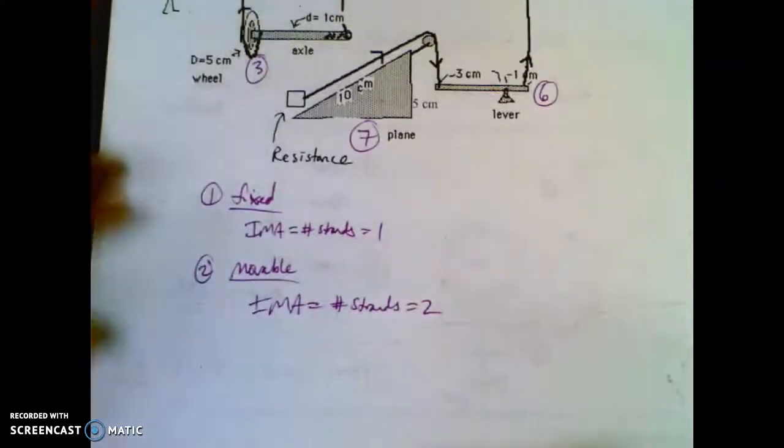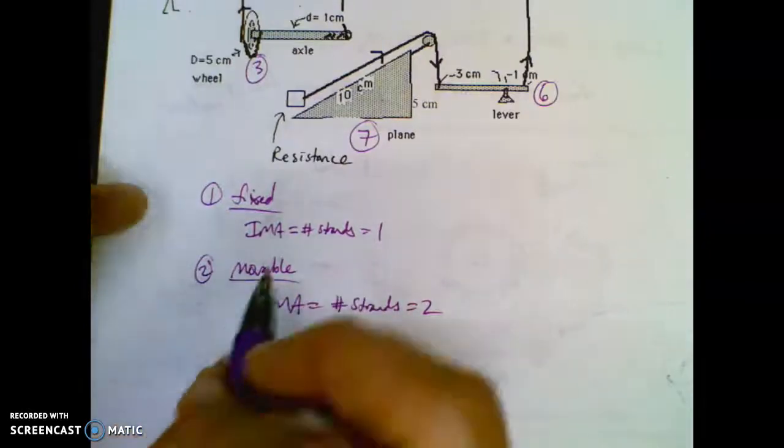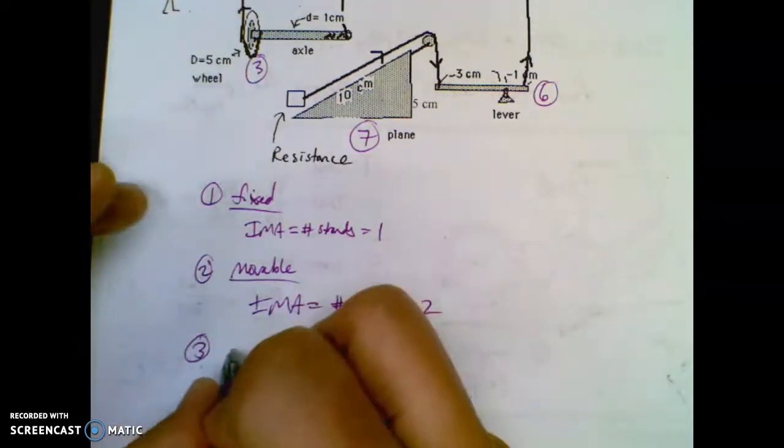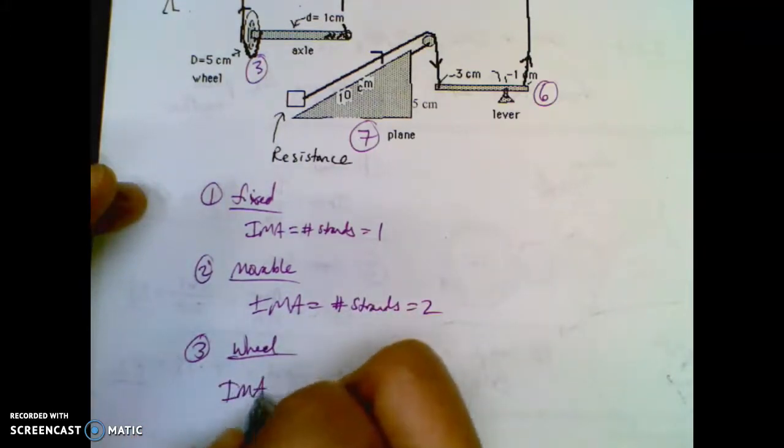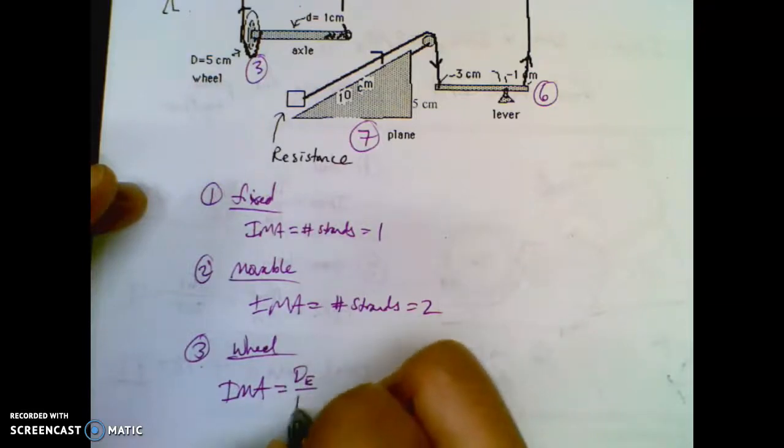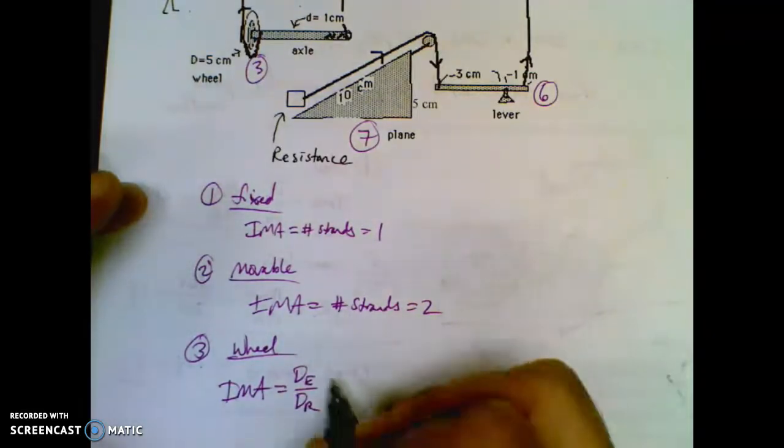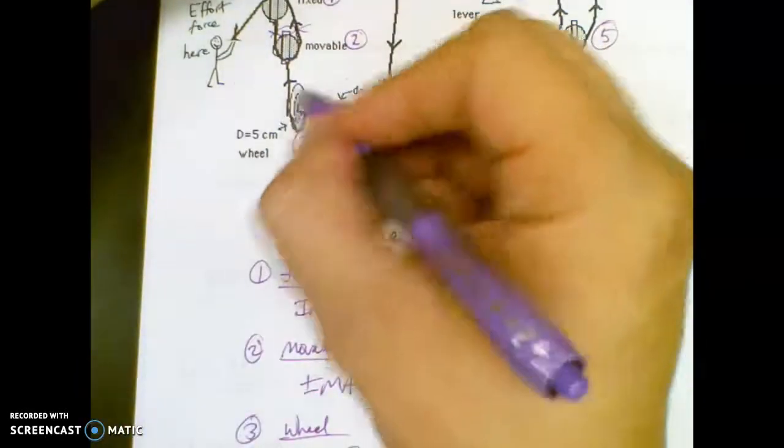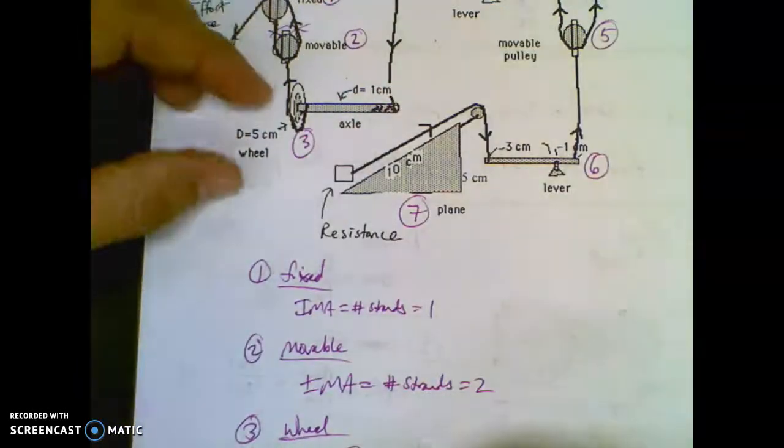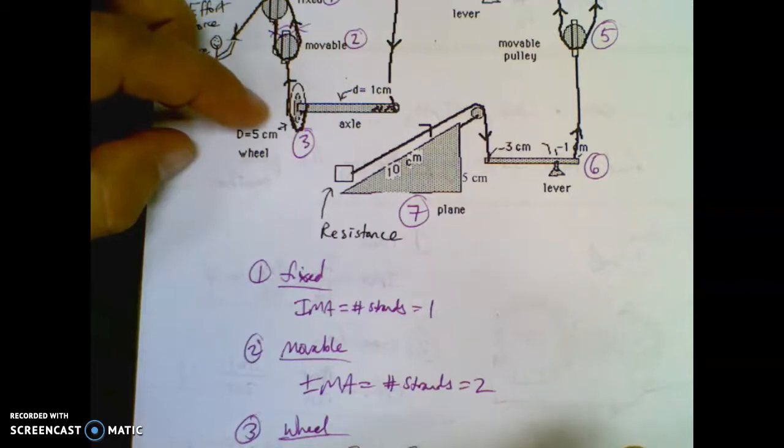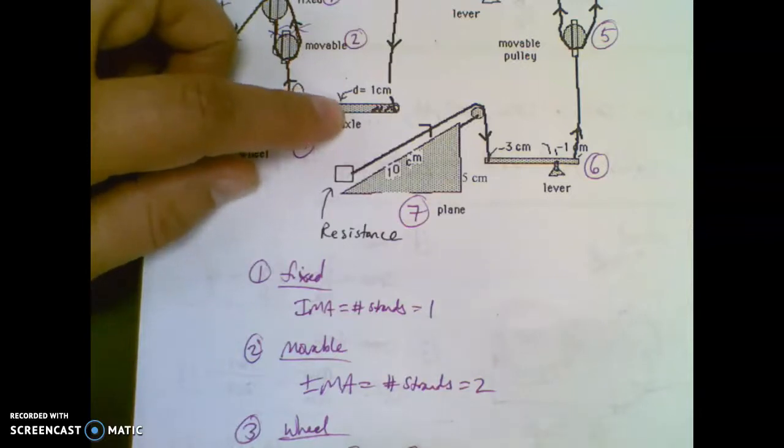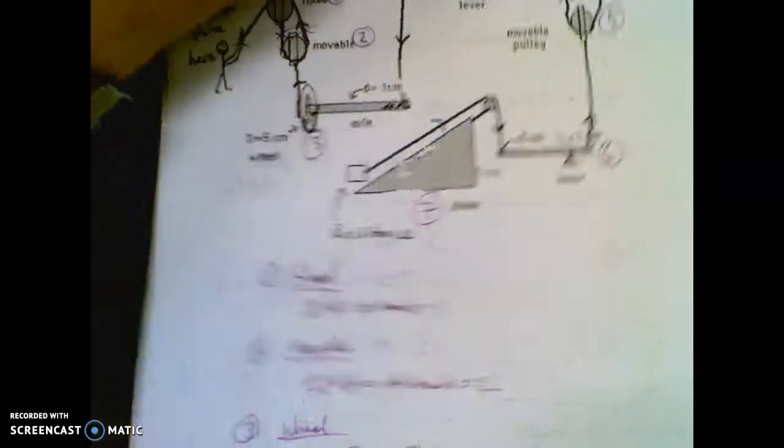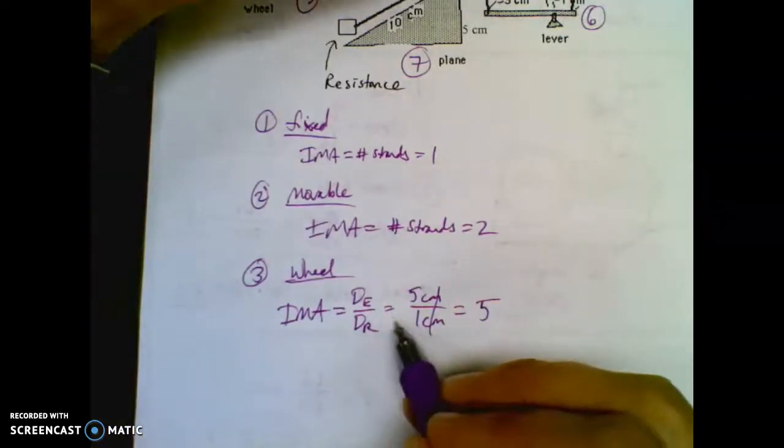So let's move to the next shape. It's a wheel and axle. Now you got to think of where the effort is and where the resistance is. Wheel and axle. Remember, IMA is DE over DR, which would be the effort. Think about where your effort is. You're pulling on the outer part. So your diameter of this is your effort, five centimeters, over your diameter of the axle, which is one centimeter. That's your resistance. Centimeters cancel, you get an IMA of five.